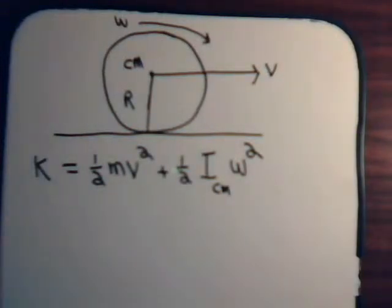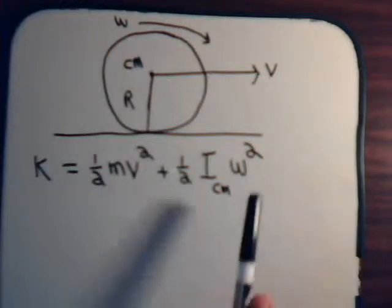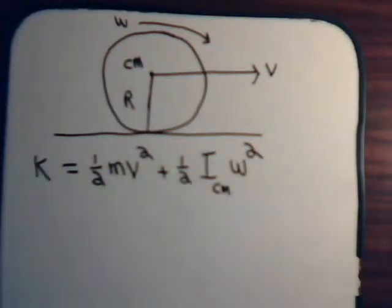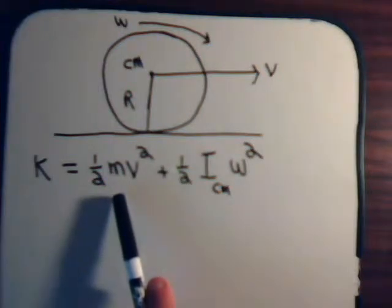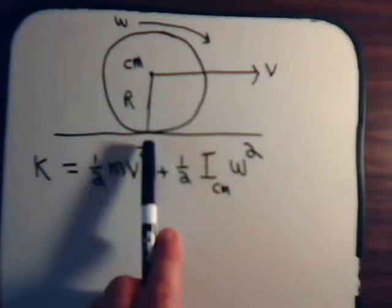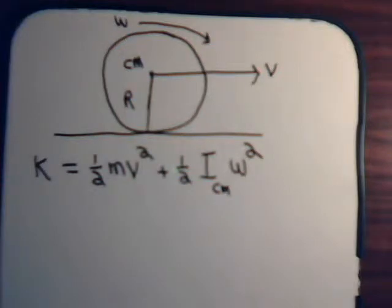Back in video 20 we determined that when you have translational motion and rotational motion, we derived this expression for the kinetic energy of the system. We're going to use this equation now to discuss the rotation of the disc when it's in pure roll.